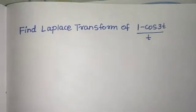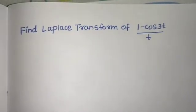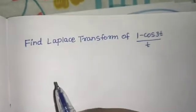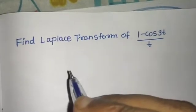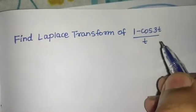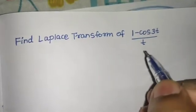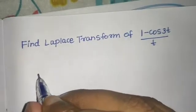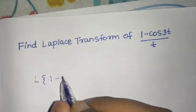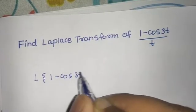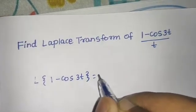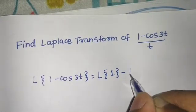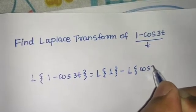Let's find the Laplace transform of (1 minus cos 3t) divided by t. We already know the Laplace transform of 1 and also for cos(at). So first we find the Laplace of (1 minus cos 3t), which we can write as Laplace of 1 minus Laplace of cos 3t.